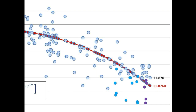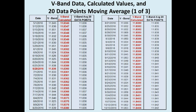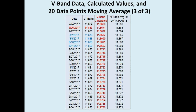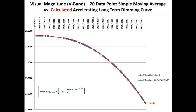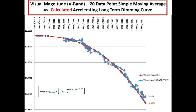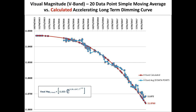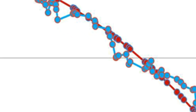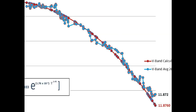To see more clearly how well the equation for the accelerating long-term dimming is tracking to the actual measured data, we took the 20 data point simple moving average of all the V-band measurements — each time a measurement was taken, we averaged in the previous 19 measurements along with it and then plotted that averaged data point. When we plot all the 20 data point simple moving averages superimposed on the accelerating long-term dimming curve, notice how well we are tracking so far. Without any tweak to the original equation, we are able to predict with accuracy the accelerating long-term dimming.